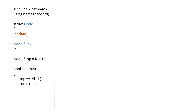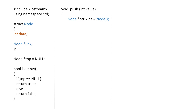So if top is equal to null we will simply return true, else we will return false. Next let's implement the push function, which takes as argument an integer value — that is the element to be inserted in our stack. For that we will firstly create a new node using the new operator and return its address into the pointer ptr, then we will insert the value in the data part of the node.